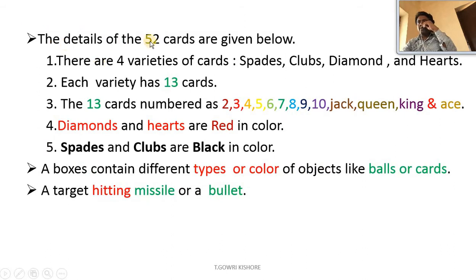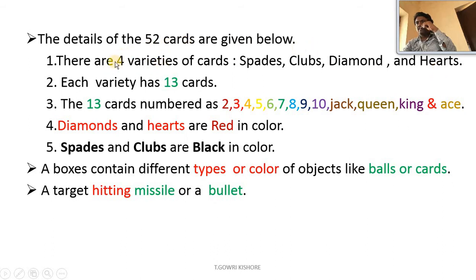The details of 52 cards are given below. There are four varieties of cards: spades, clubs, diamonds, and hearts. These 52 cards are divided into four varieties called spades, clubs, diamonds, and hearts.